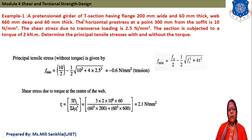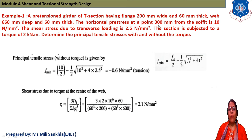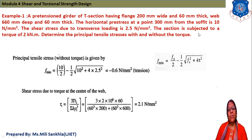Now we solve Example 1. Given data: a pre-tensioned girder of T-section has a flange 200 mm wide and 60 mm thick; web is 660 mm deep and 60 mm thick. The horizontal prestress at a point 300 mm from the soffit (bottom) is 10 N/mm². Shear stress due to transverse loading is 2.5 N/mm², and the section is subjected to a torque of 2 kN·m.